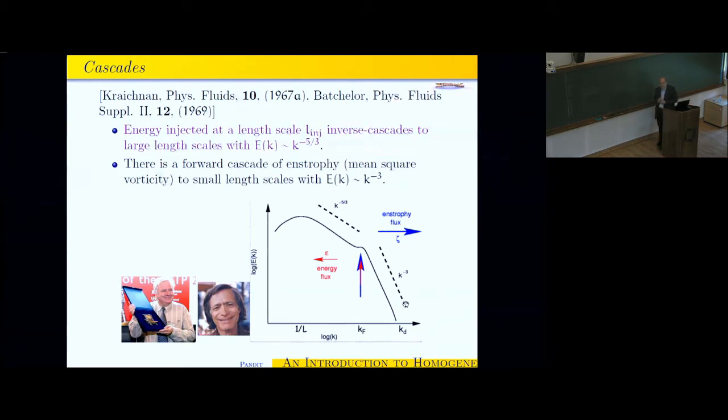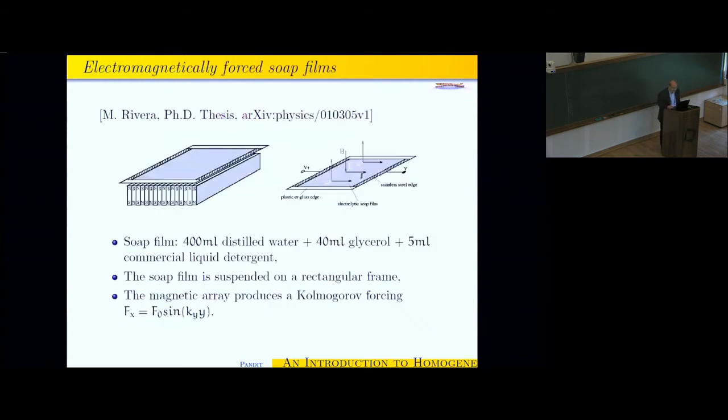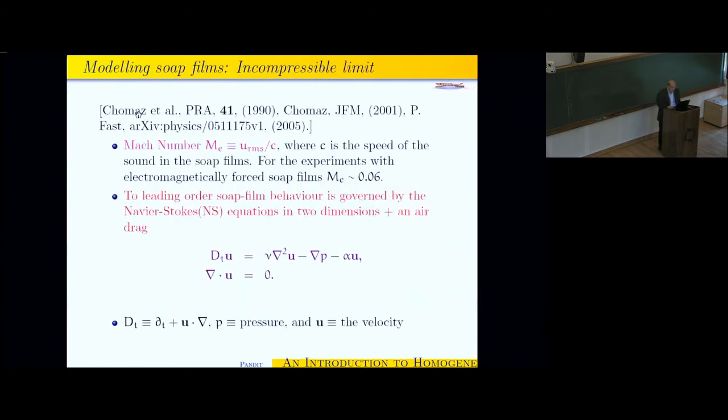And then there is a forward cascade of enstrophy, which is mirrored in this energy spectrum with a k to the minus three power. However, if there is no friction, often, how do you realize such two-dimensional things in the lab? For example, you can get an electromagnetically forced soap film, and then you can excite it using some array of magnets. You can look at this PhD thesis if you want a nice pedagogical introduction to this. This is the thesis of Rivera.